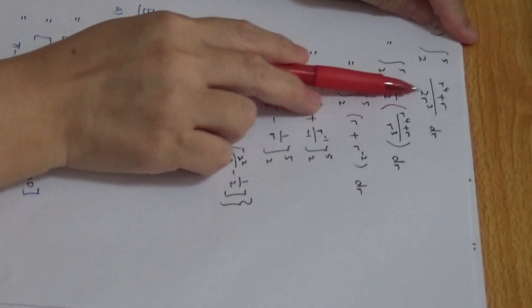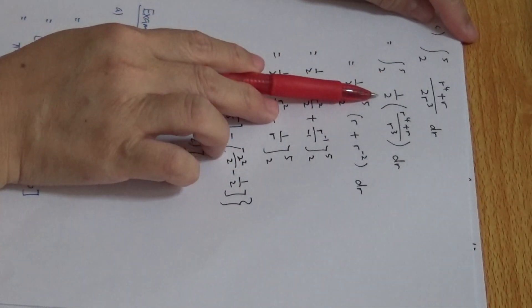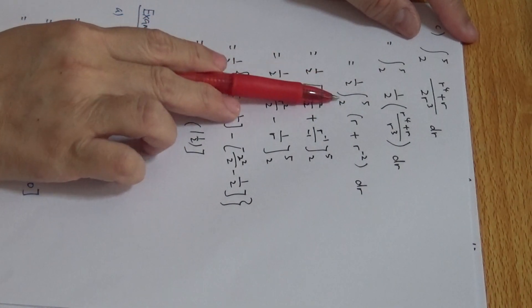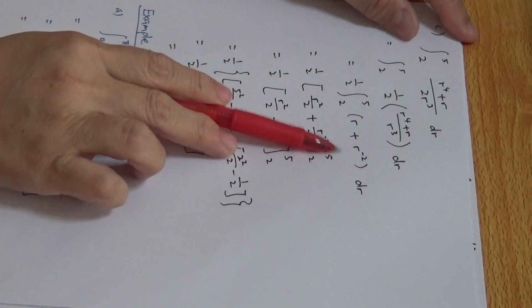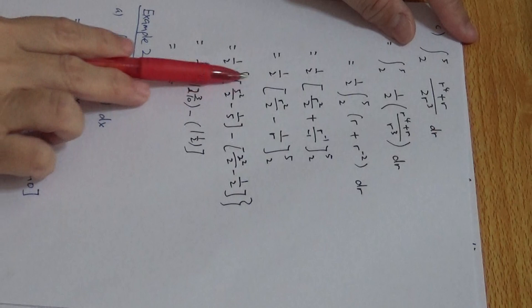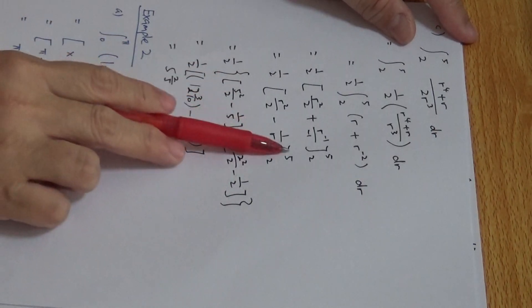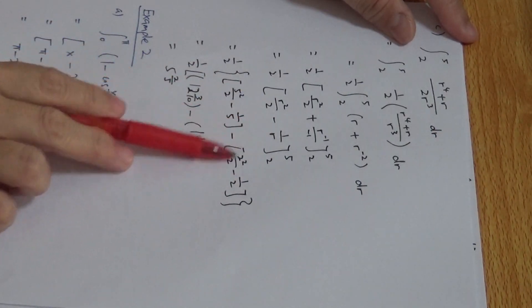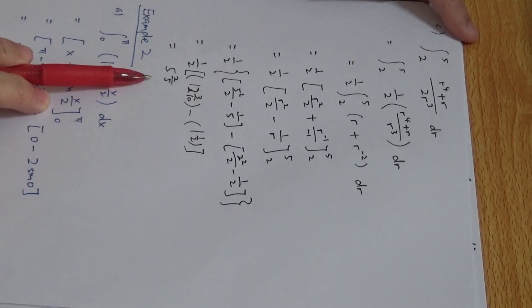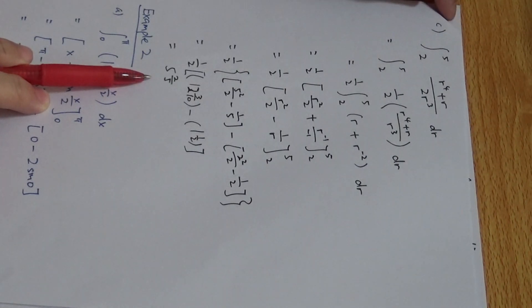For part C, I can rewrite this with a factor of one-half out front. Remember, I can bring out a constant. So I put that here, integrate, put 5 and 2, then plug in 5 and plug in 2, take the difference, and find the answer. So this will be the definite integral.